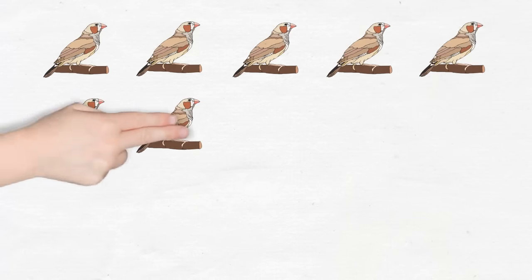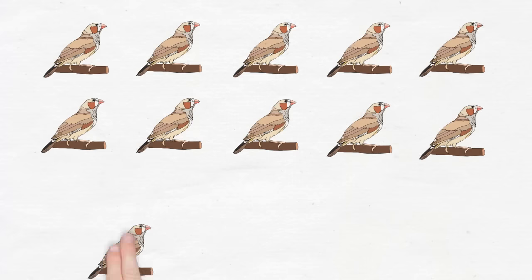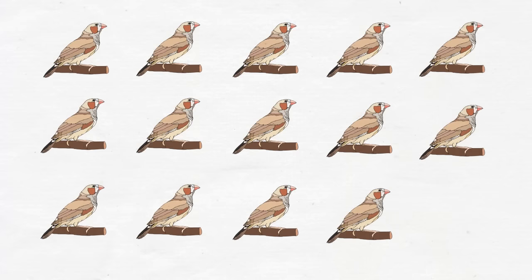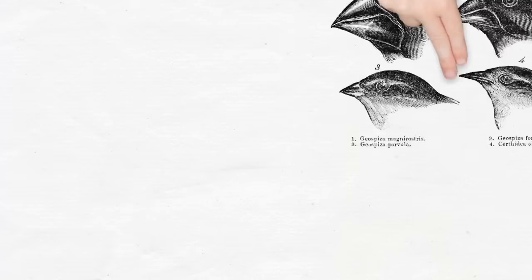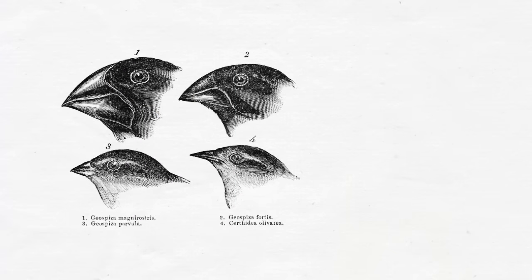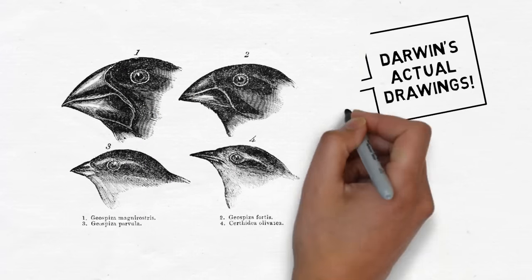Darwin had found around 15 different species of finch when he was on the Galapagos Islands. He noticed that the birds were similar to other finches in lots of ways, but their beaks were all different shapes. Darwin looked into it further. He realized that the different beaks matched the type of food available on each island.